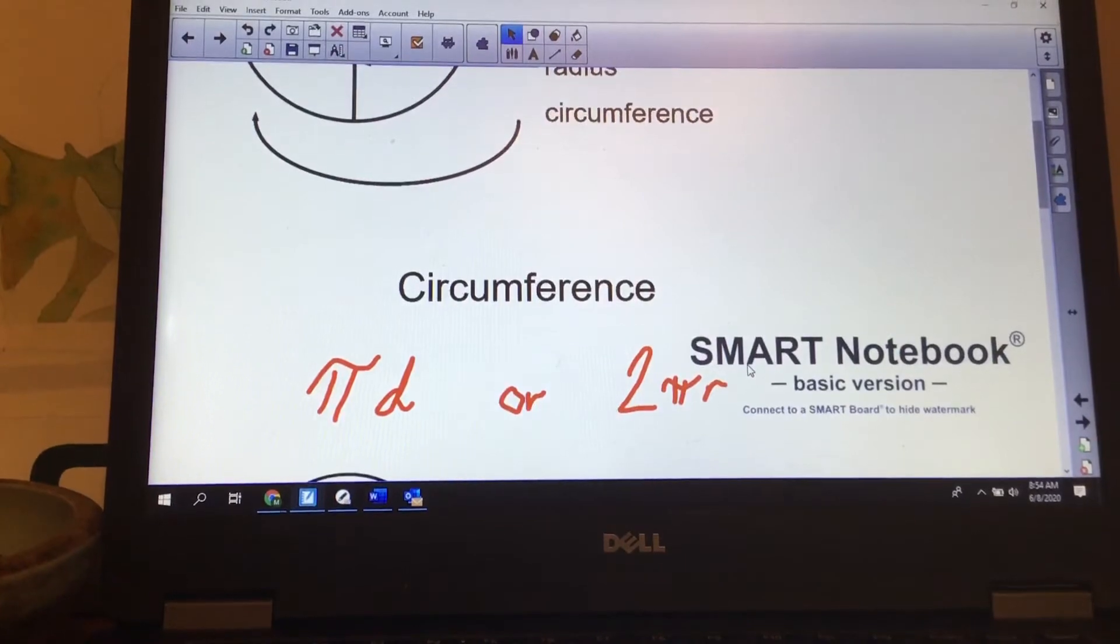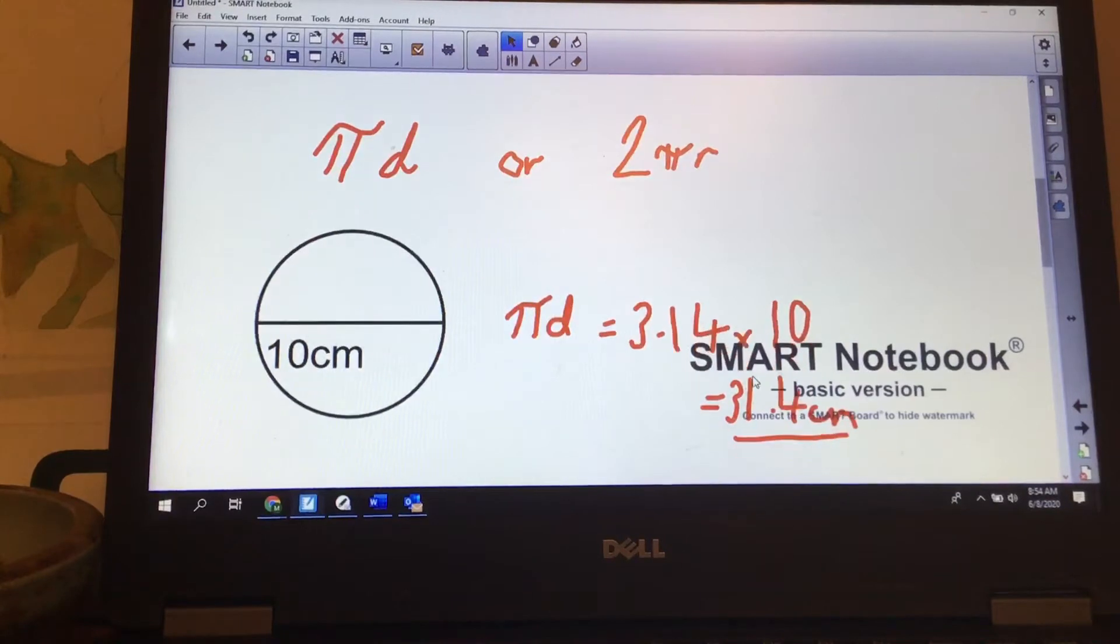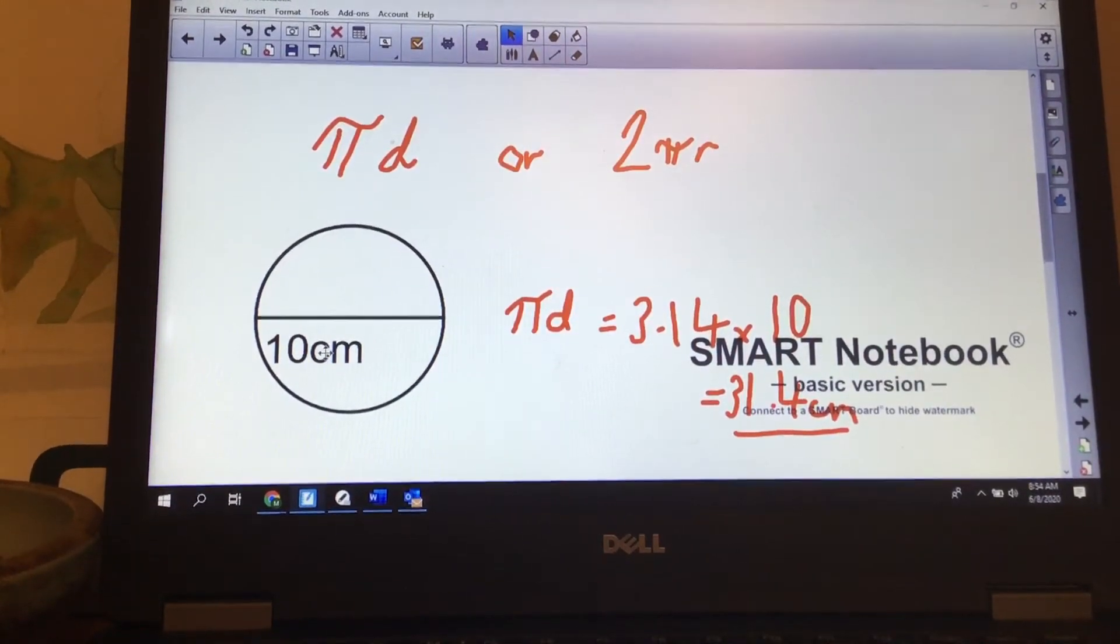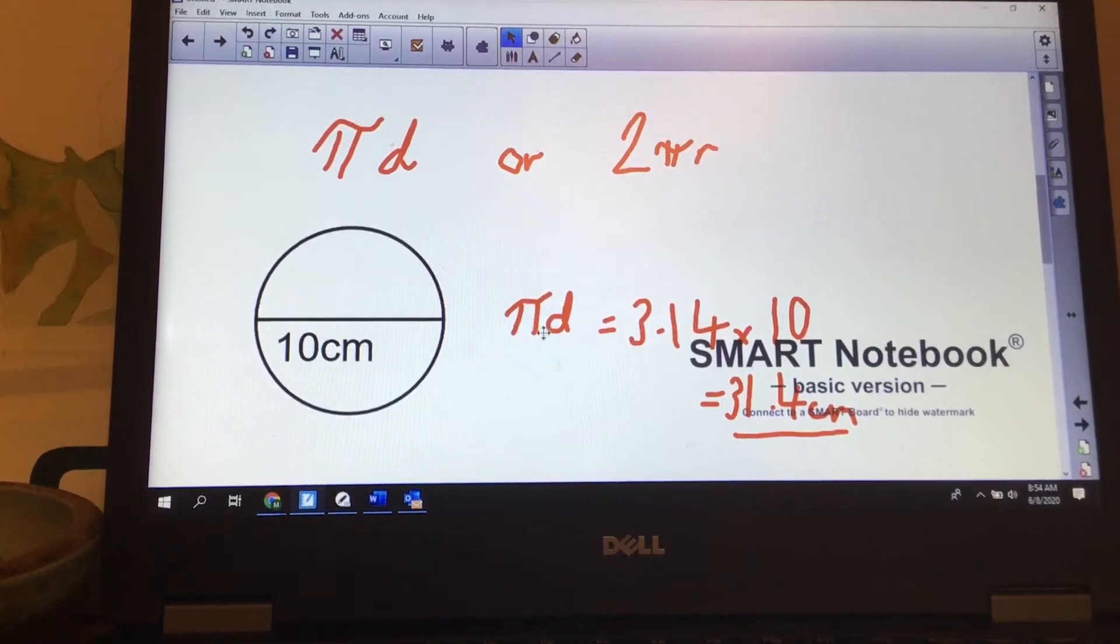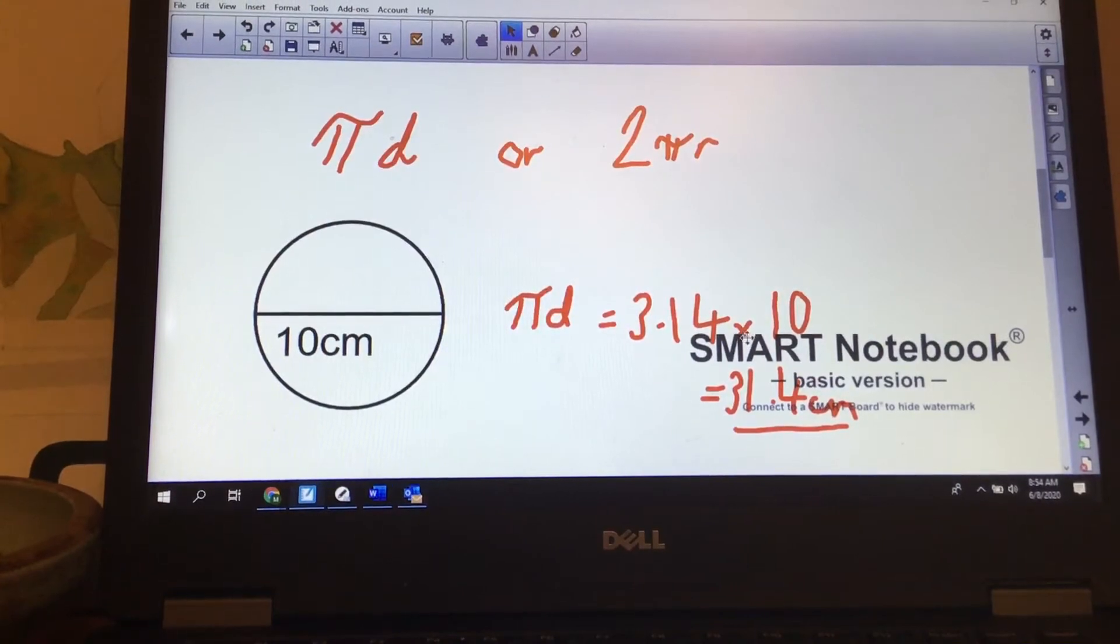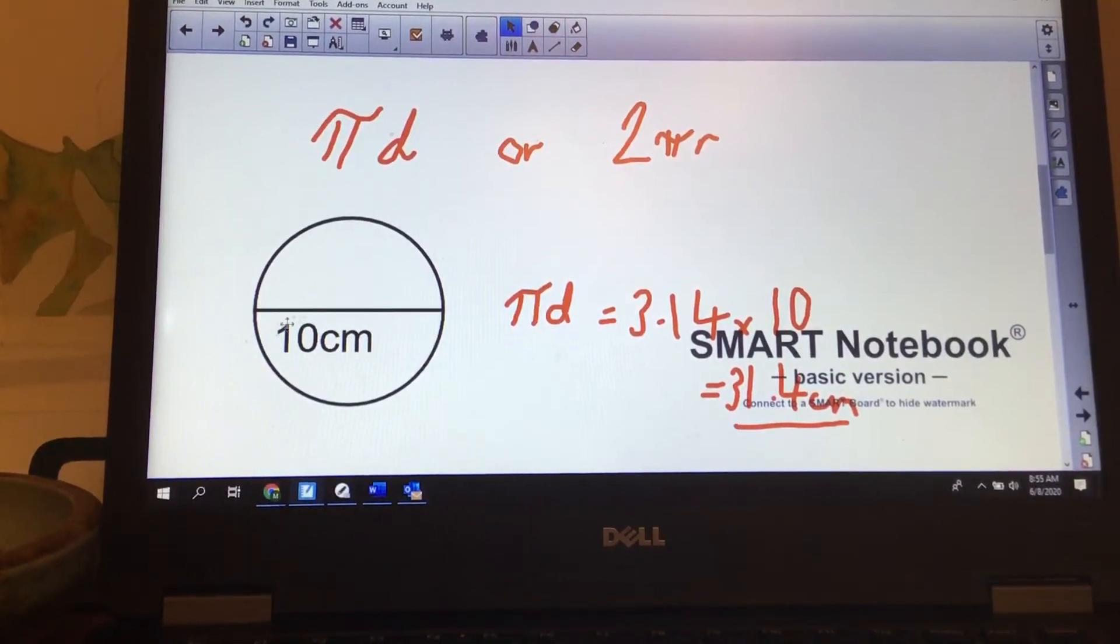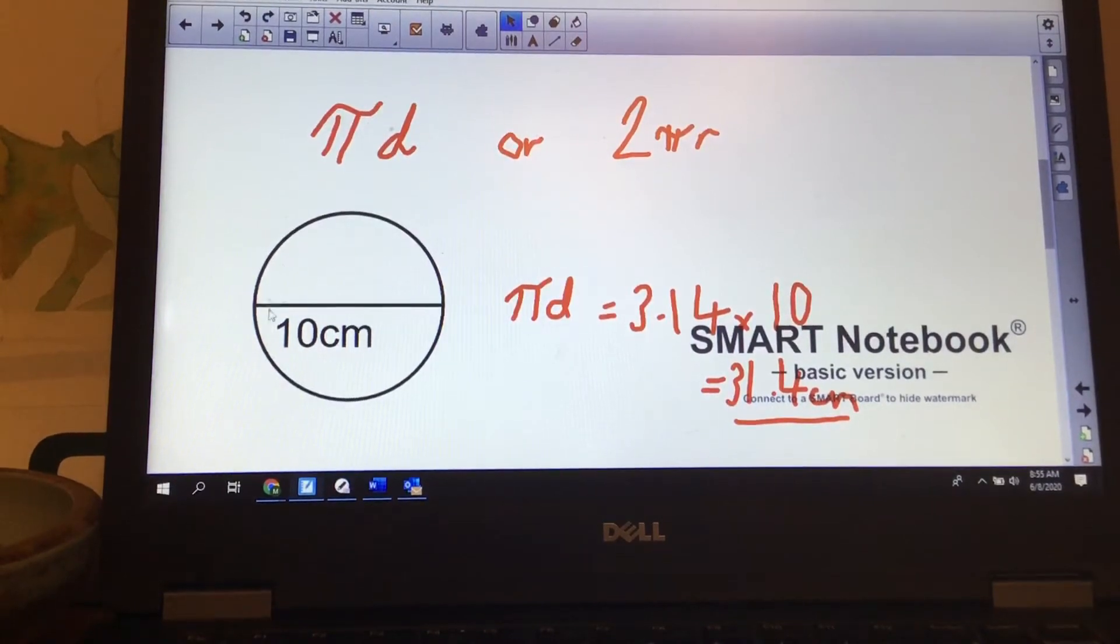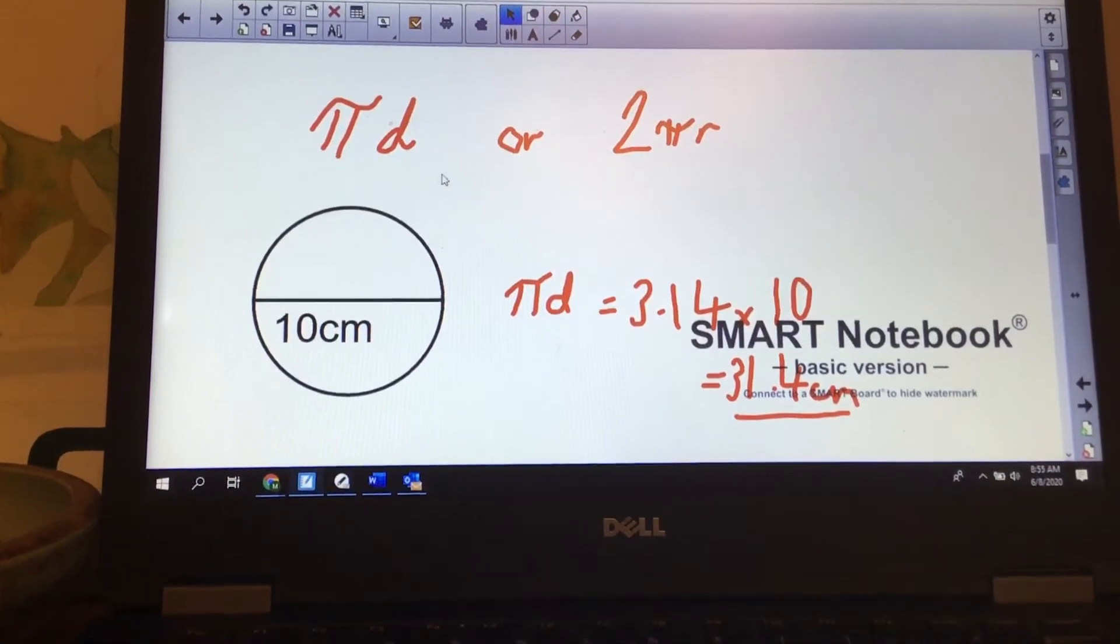It's important to always write down your formula. Here is an example. I've got a circle with a diameter of 10 centimeters. Which of my two formulas am I going to use? I can use pi times d, so 3.14, that's the value of pi, or I hit the pi button on my calculator times it by 10, and I get 31.4 centimeters. So if the distance across the middle is 10, the distance around the outside of my circle is going to be 31.4 centimeters.